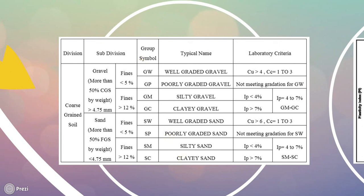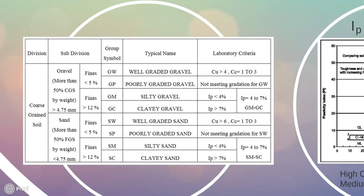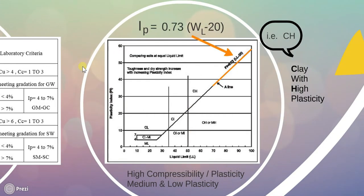Now let us move to fine-grained soils. As we already know, fine-grained soils are divided into 9 groups in the Indian Standard Classification System. Before going into detail, this is a graph of plasticity index (IP) versus liquid limit (in percentage). Generally, this classification is the laboratory classification of fine-grained soil which is done with the help of the IS plasticity chart.